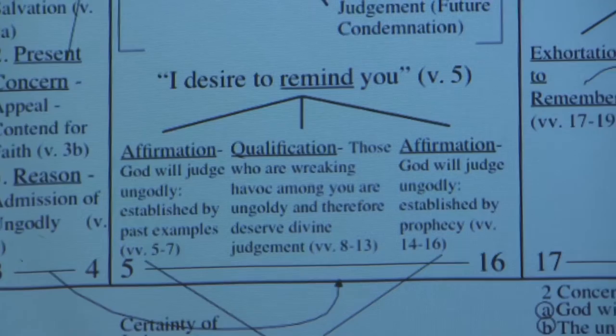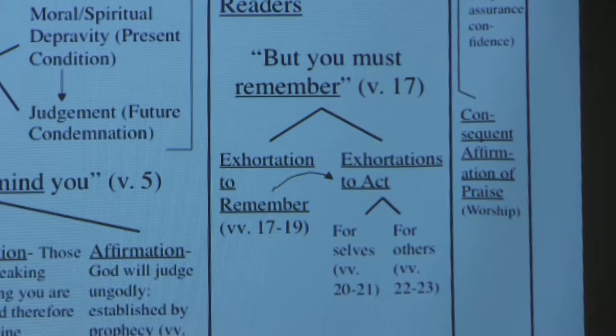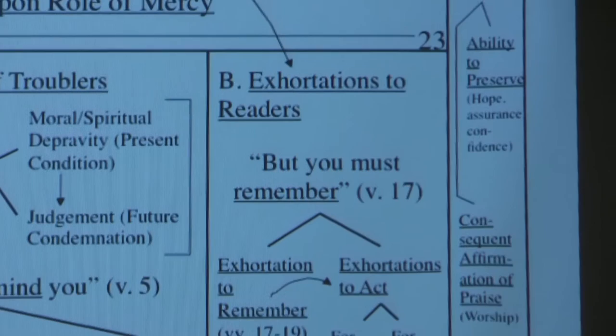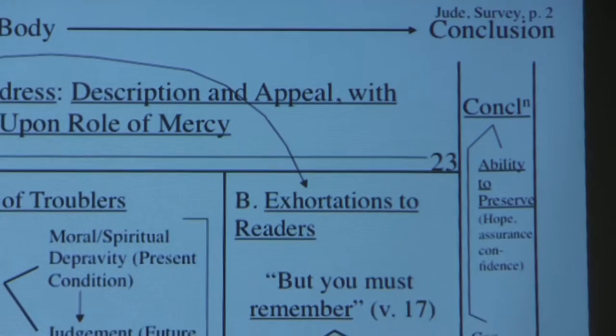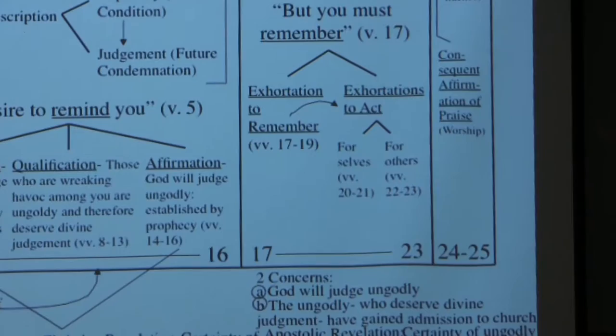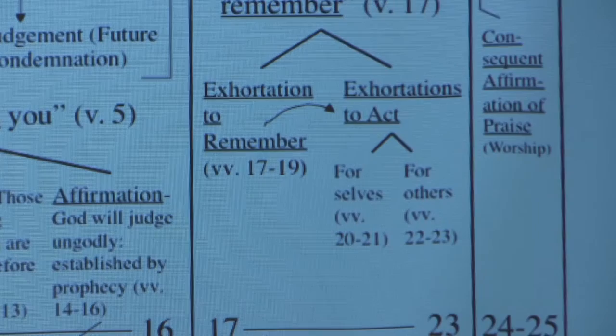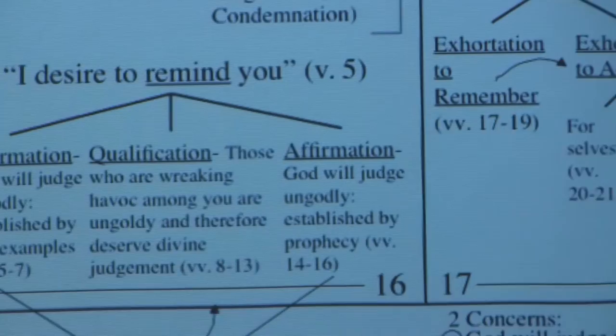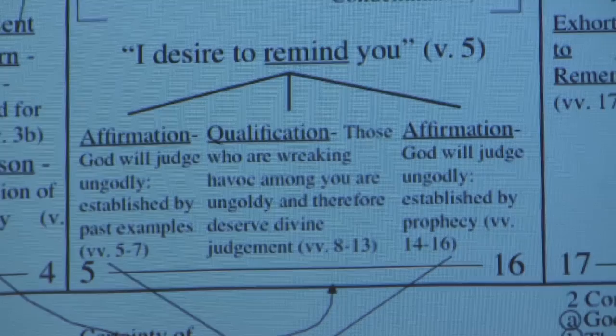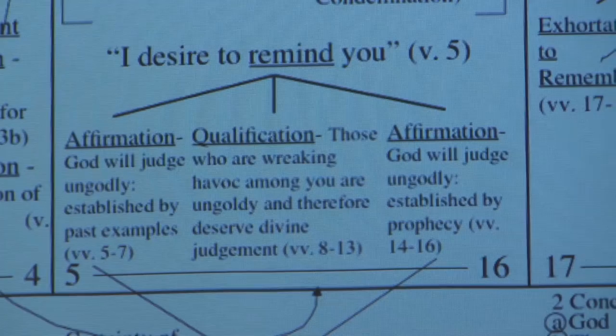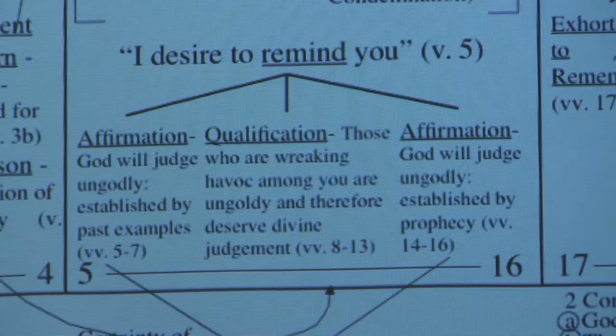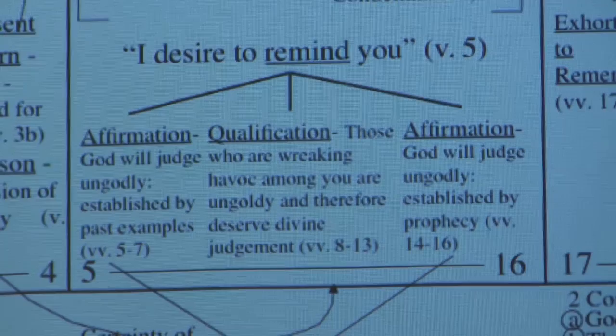Because this is so short I went a little farther in identifying units within the subunits. Within verses 5 through 16 we have the affirmation that God will judge the ungodly, established by past examples in verses 5 through 7, and then in verses 8 through 13 the qualification that the ungodly who are wreaking havoc among you deserve divine judgment, and then back to the affirmation in verses 14 through 16, established by prophecy.